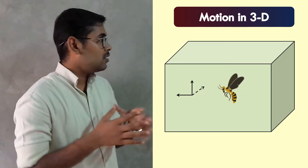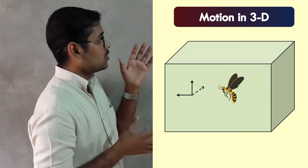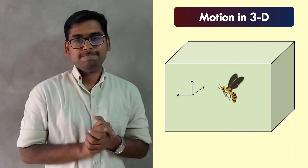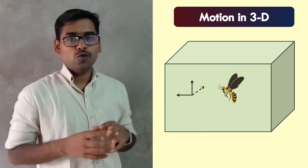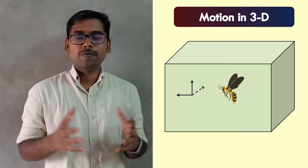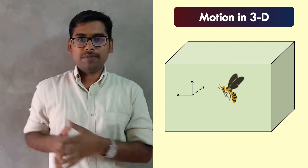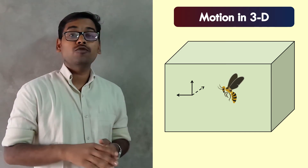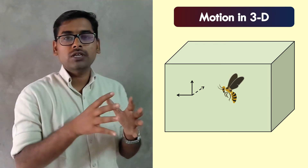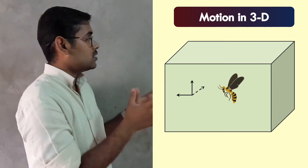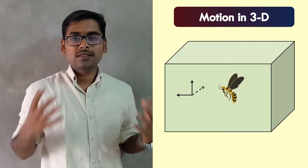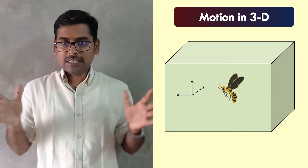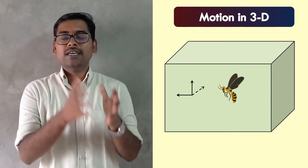Finally, for motion in three dimensions, consider the motion of a housefly flying in your room. A housefly has more options — it can move forward, backward, sidewards, and even upwards and downwards. Basically, it can move in three different dimensions. This is the example of motion in three dimensions. Since we live in a three-dimensional space, most of the motions we see around us come under this category.